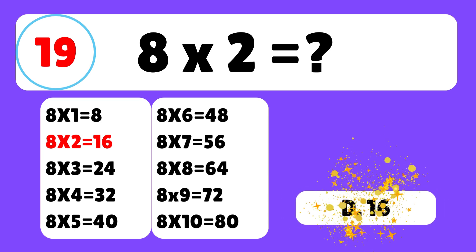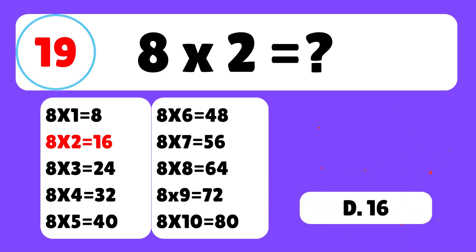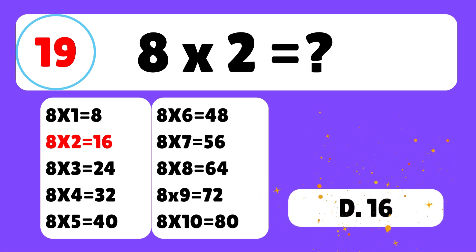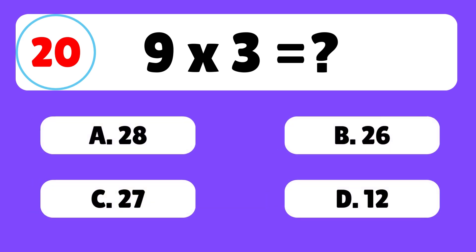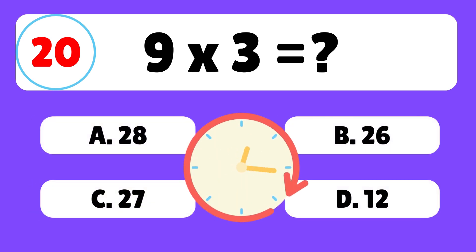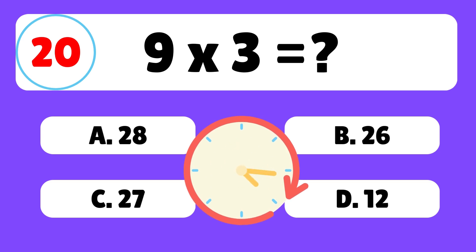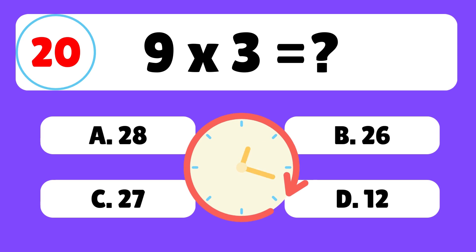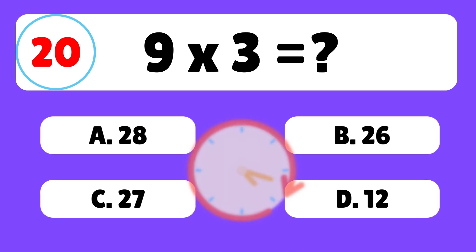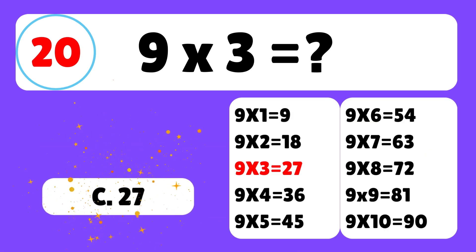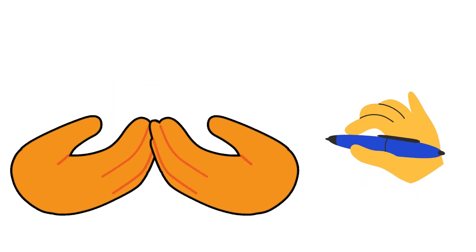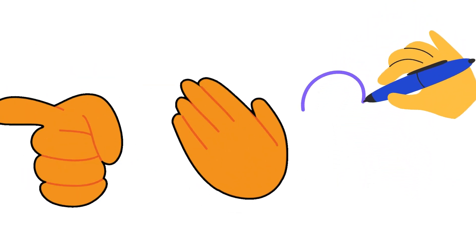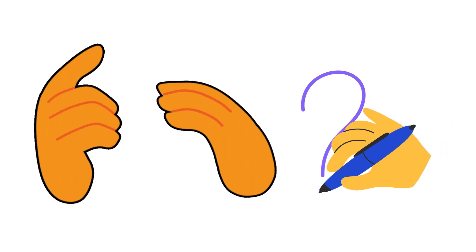Question nineteen: what is eight times two? The answer is D — eight times two is equal to sixteen. Question twenty: what is nine times three? The answer is C — nine times three is equal to twenty-seven. Amazing job everyone! How many did you get right?